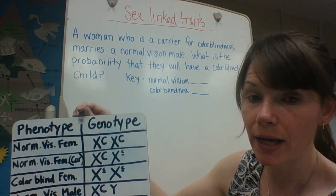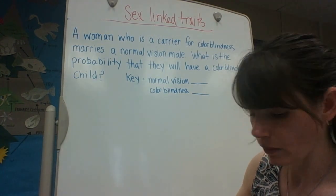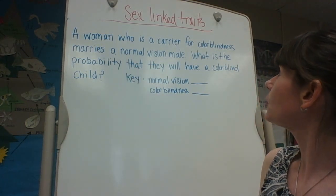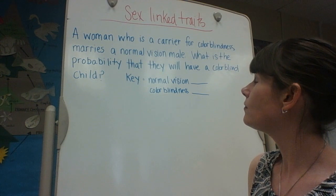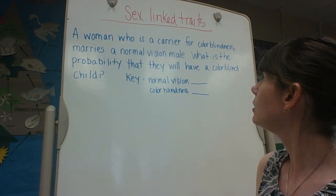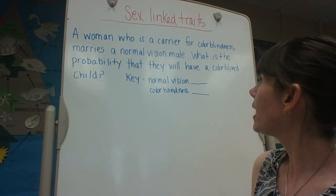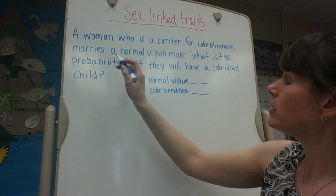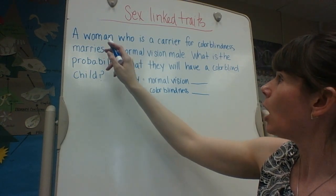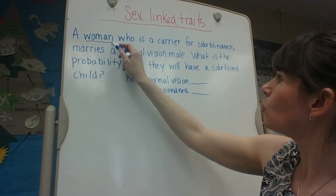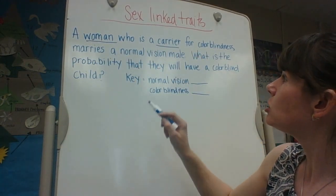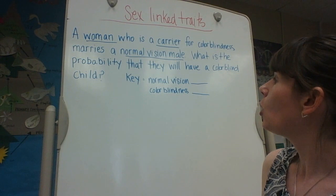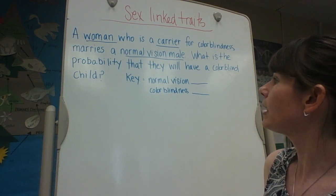Let's take a look at our first practice problem. A woman who is a carrier for colorblindness marries a normal vision male. What is the probability that they will have a colorblind child? The first thing to do is underline the important parts: a woman carrier marries a normal vision male.